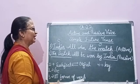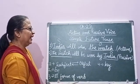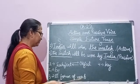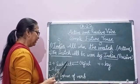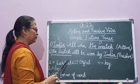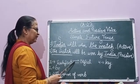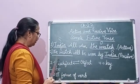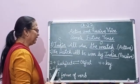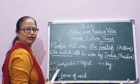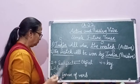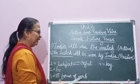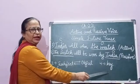You must remember while changing active to passive in simple future tense: interchange of subject and object, always use 'be' after will or shall, use the third form of the verb, and add 'by'.